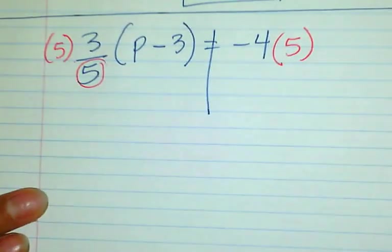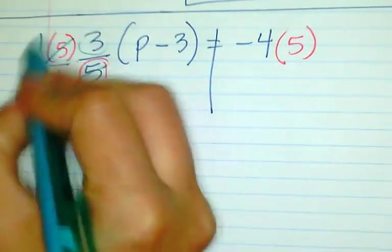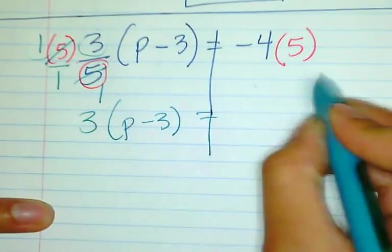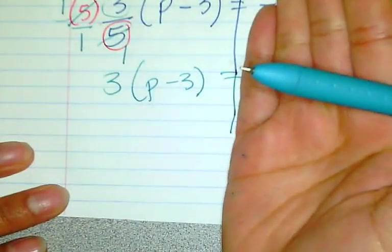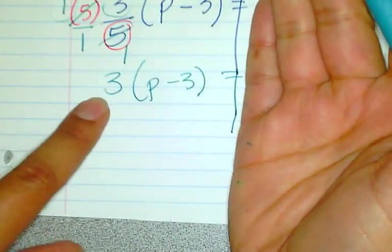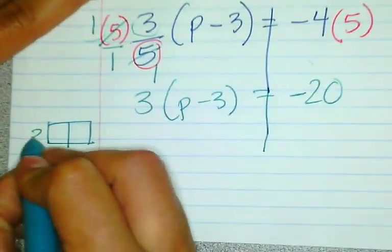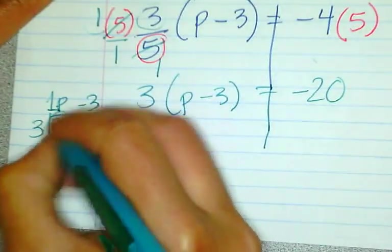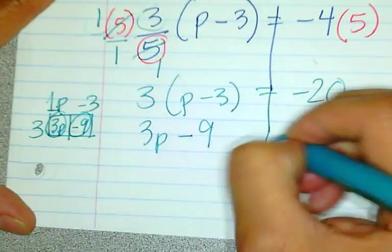Over here it's as if you're multiplying, and diagonally these two cancel into 1. I only have the 3 and the 1 left over, so I rewrite this as 3 times (p minus 3), and over here it'll be negative 20. Now I need to simplify this side using the distributive property — either with arrows or the tabular box method. Remember there's no written coefficient so the coefficient is 1... giving 3p minus 9. So I have 3p minus 9 equals negative 20.